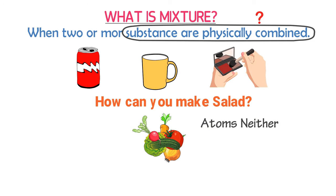Remember that a mixture is not a pure substance — it is an impure substance. Because two or more substances are physically combined together, we have two different kinds of particles in a mixture, and those particles do not have the same chemical properties. For example, when you mix water and salt, water molecules have different properties than those of salt. Therefore, we say that a mixture is an impure substance. This was all about element, compound, and mixture. Thank you very much for watching this video.